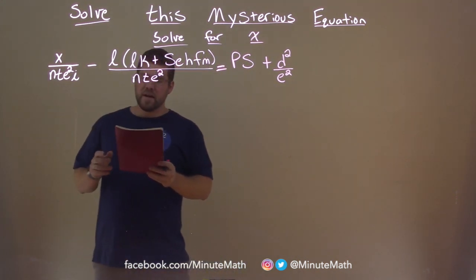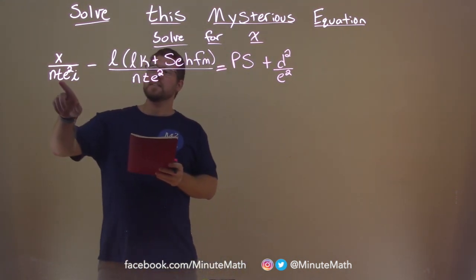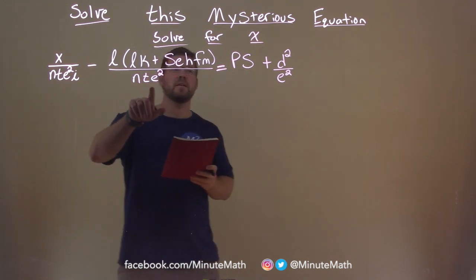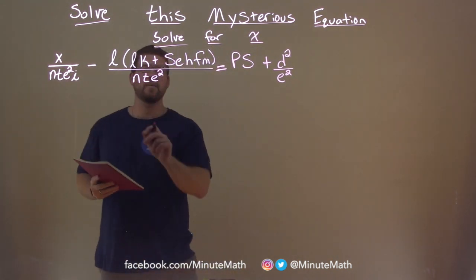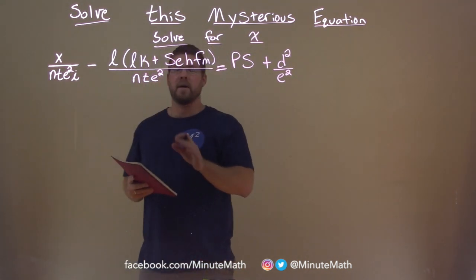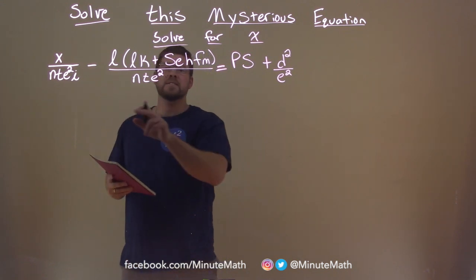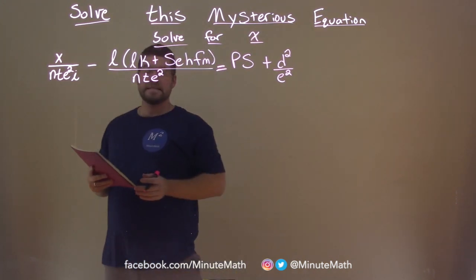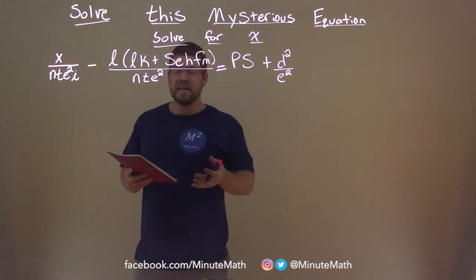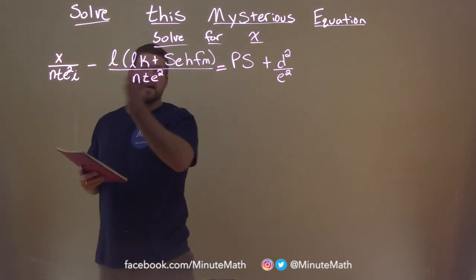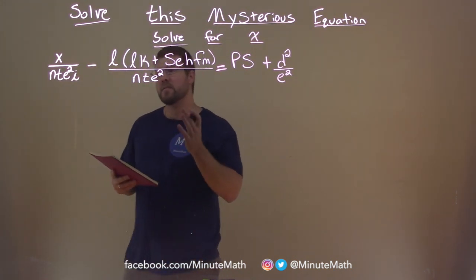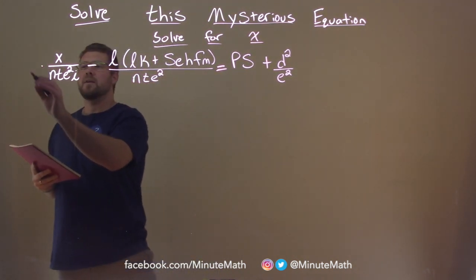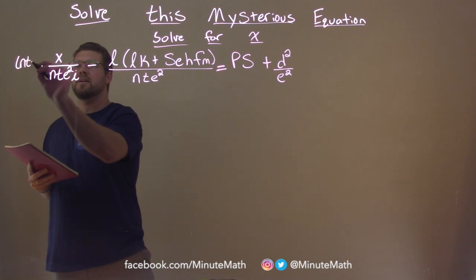First thing I notice is I see an nte squared kind of in the denominator on this side. There's an i there, but we don't have to worry about that right now. We have nte squared right here and here, and there's kind of an e squared here, so if I multiply nte squared to both sides, we're going to eliminate some of the fractions here. And that's going to be helpful. So if I multiply here both sides by nte squared.